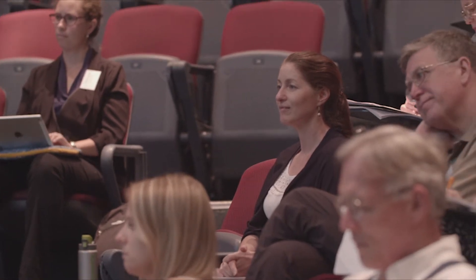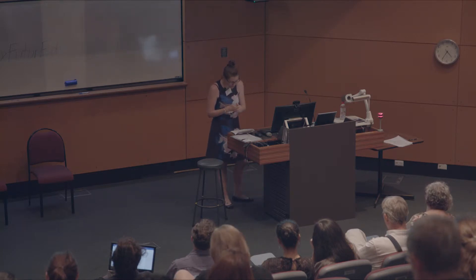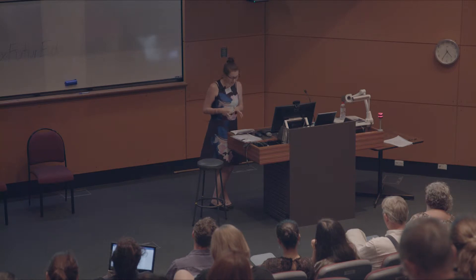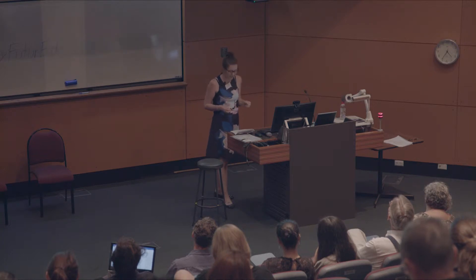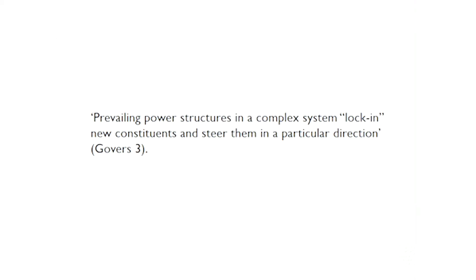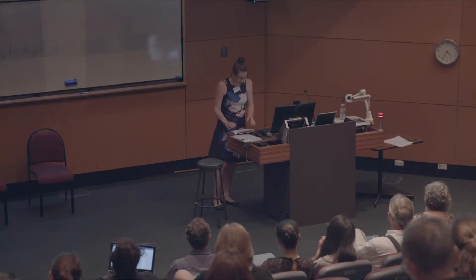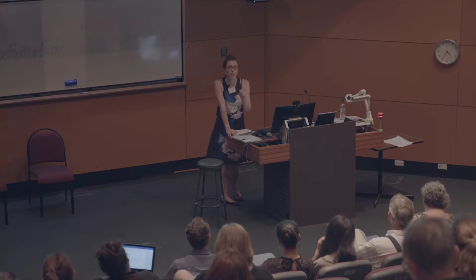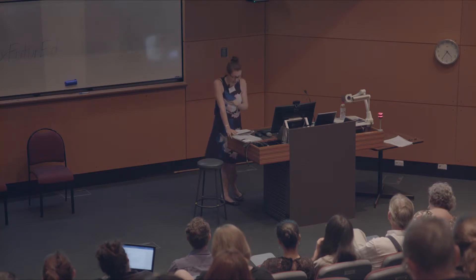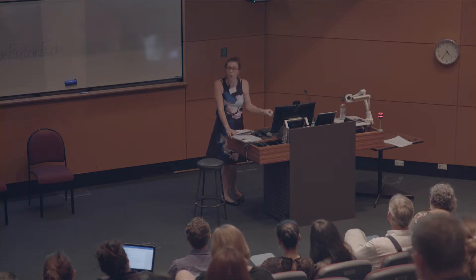I was actually really interested that you mentioned this question of powerful knowledge and power — I think that might resonate in interesting ways. I mentioned before that a complex system does not have a single leader who holds power, but it does have controlling and dominant behavioural patterns. Goevers writes that these prevailing power structures in a complex system lock in new constituents and steer them in a particular direction, and I think it's very easy to apply that to our students. These behavioural patterns — or 'attractors,' to use the complexity theory technical term — are not about individual or organisational control, but rather about the strength of a system's behaviours: the direction a system is most likely to go in.